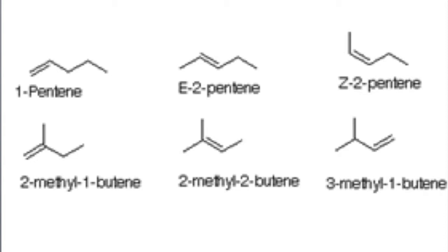So the first one is 1-pentene. It's a chain of 5 carbon atoms with a double bond between the first carbon and the second carbon, but we name it 1 because we name it after the first bond.